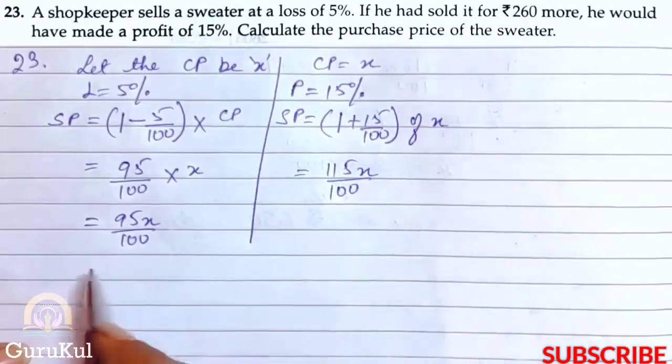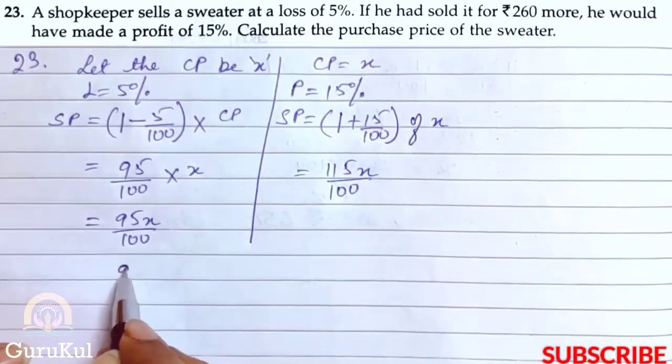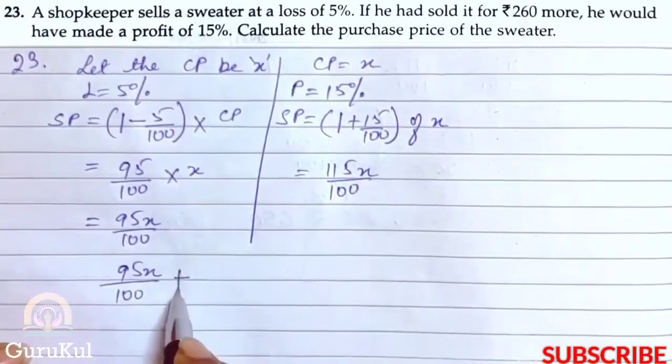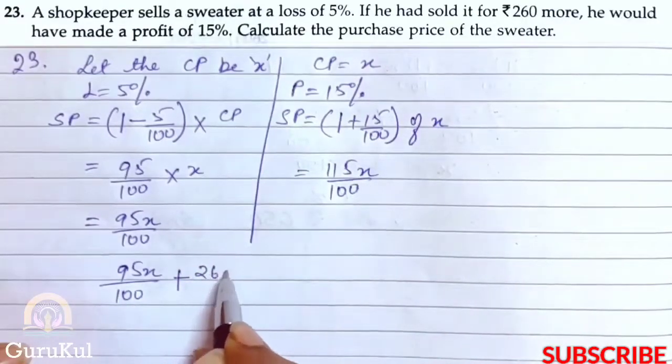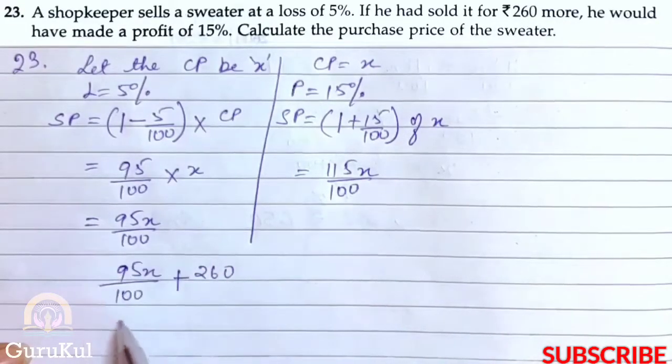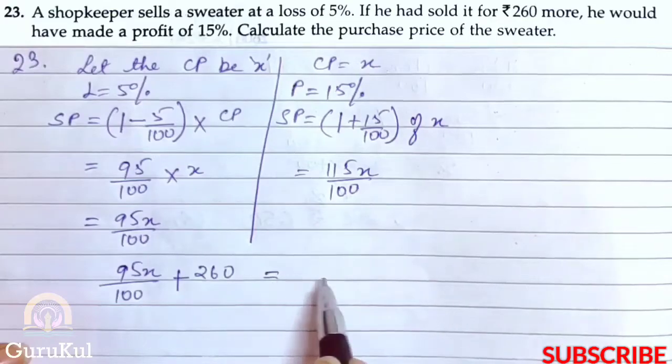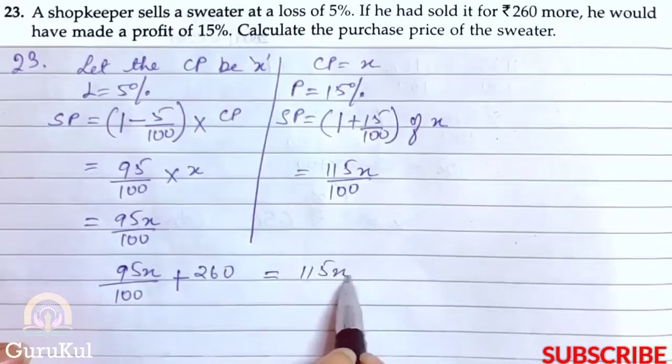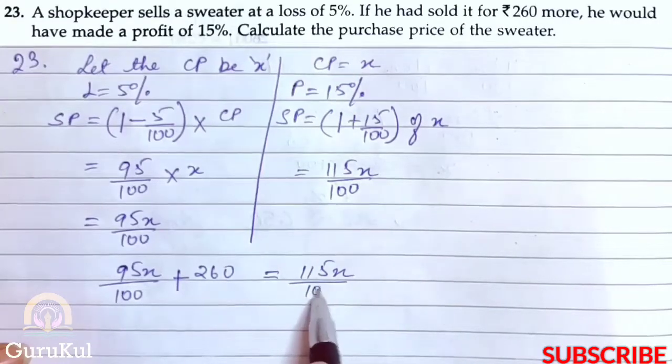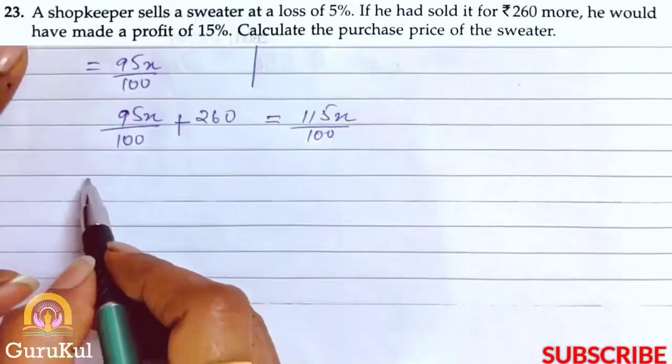So our new equation is: 95x by 100 plus 260 equals 115x by 100. If he adds 260 to the loss SP, it equals the 15% profit SP.